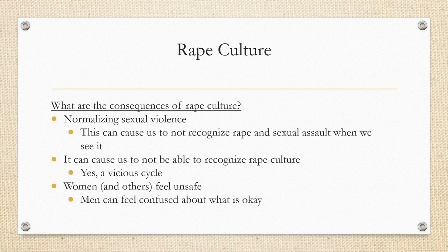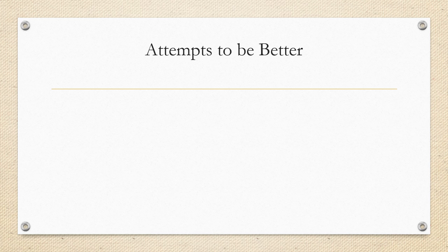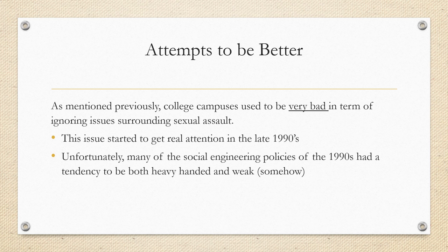All of this conversation leads us to: what have people done to try to actually be better? As mentioned previously, college campuses used to be very bad in terms of ignoring issues surrounding sexual assault. This issue started to get real attention in the late 1990s — keeping in mind that many older colleges in the United States that were founded around the 1880s had about 120 years to get better and didn't. It was about a hundred years after most colleges were founded that they started to think, maybe we need to make our campus a place where sexual assault is not common — which is deeply problematic.